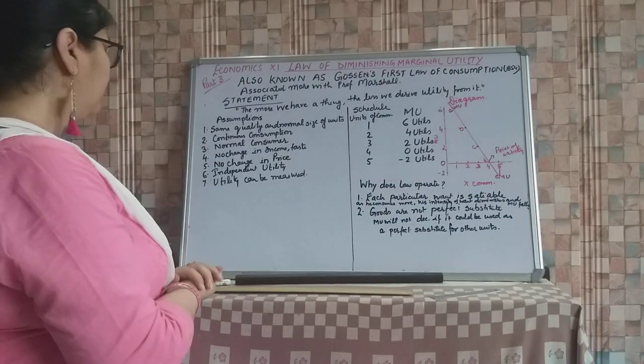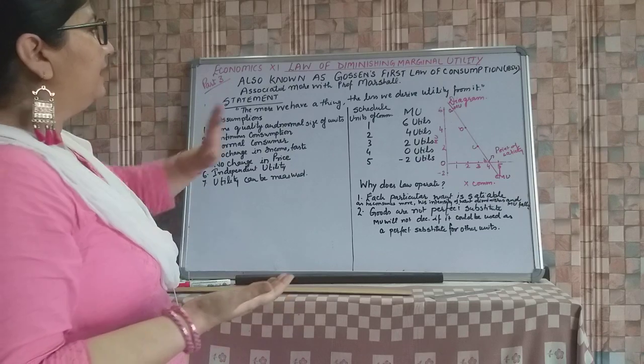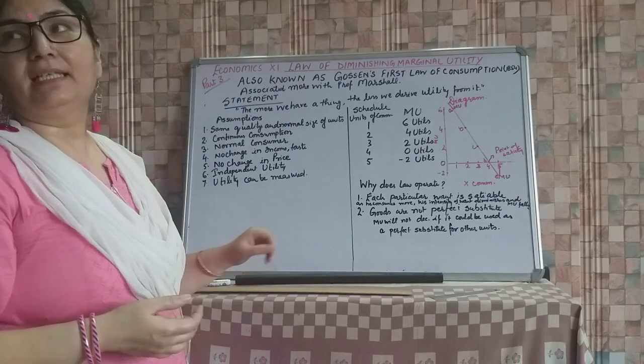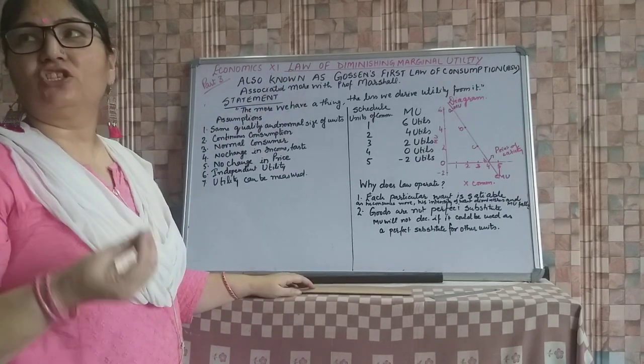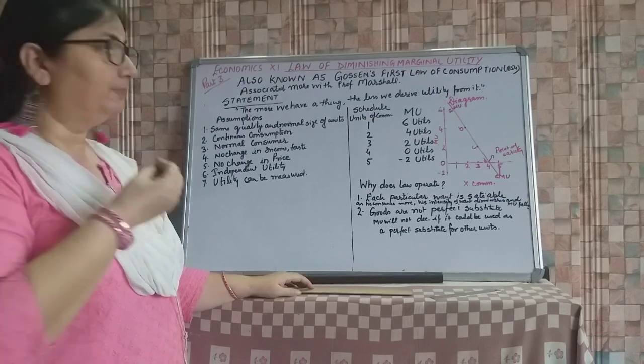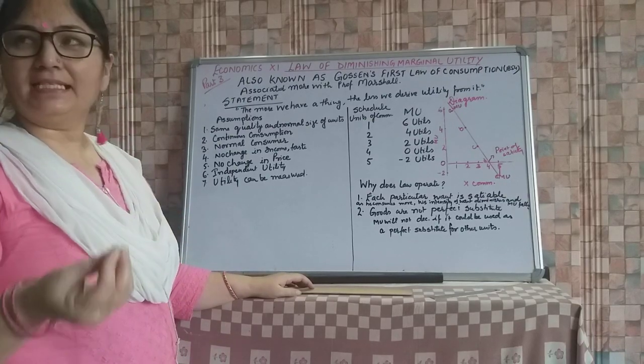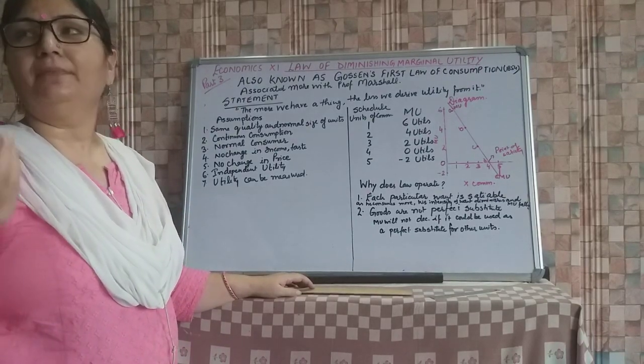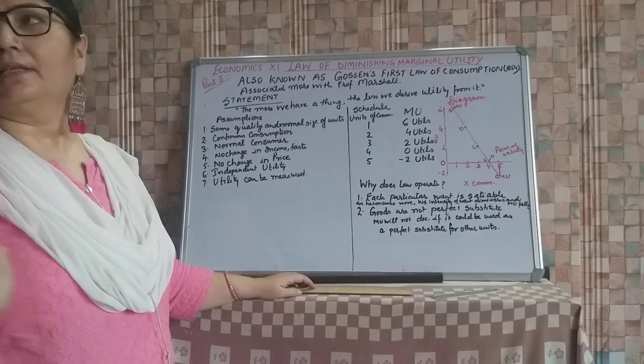And what we can say that it is also known as the law of diminishing marginal utility means the more we have a thing the less we derive utility from it.